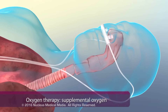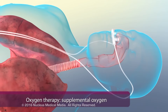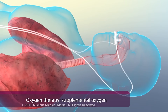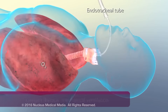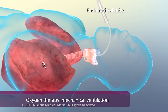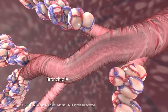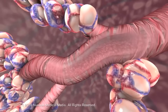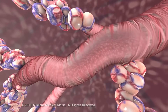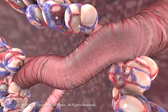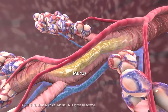Common treatments for respiratory failure include oxygen therapy via supplemental oxygen or mechanical ventilation. Other common treatments include medications such as bronchodilators and steroids, which reduce airflow resistance, and antibiotics, which kill bacteria causing bronchitis and other infections.